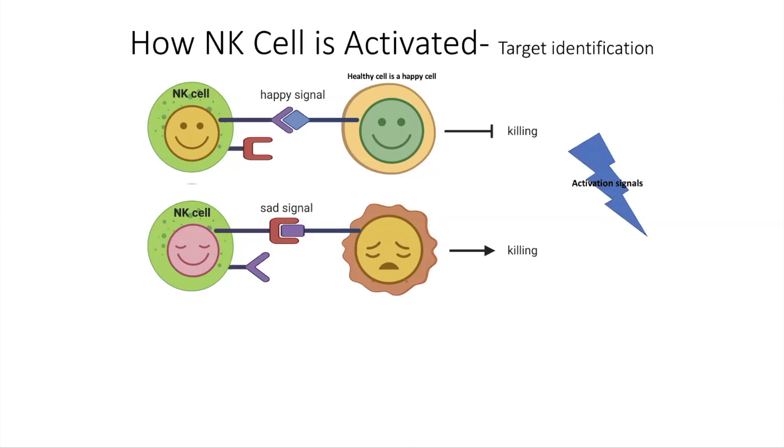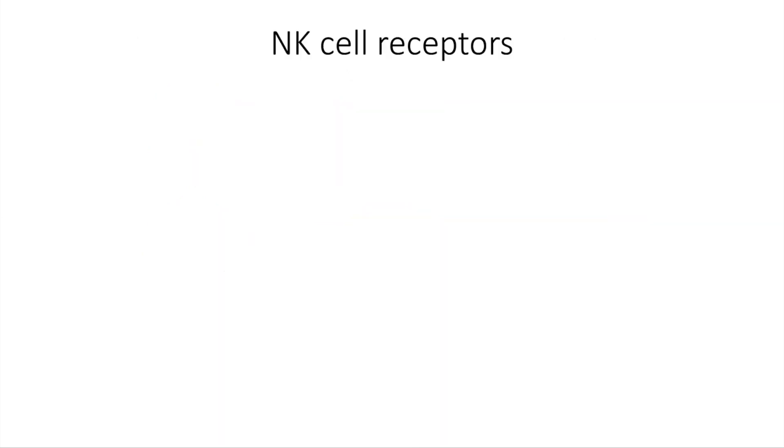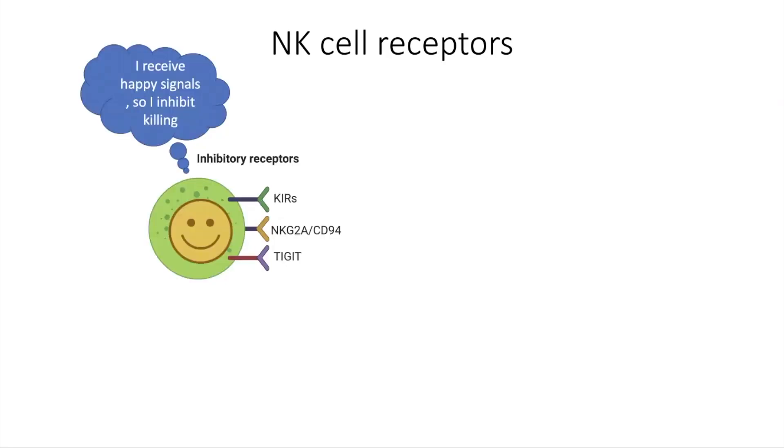So in biology of NK-cells, what are the receptors that receive happy and sad signals called? Usually, happy signals are received by receptors called inhibitory receptors such as KIRs or killer immunoglobulin receptors and other inhibitory receptors like NKG2A and TIGIT.